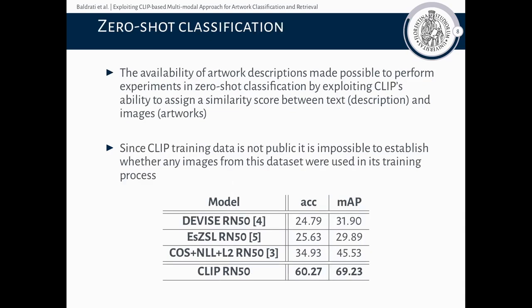We then performed an experiment on zero-shot classification of artworks, thanks to CLIP's ability to score the similarity between an artwork image and an artwork description. The results are shown in the table in the slide. We can see that the performances using CLIP are quite impressive, with an accuracy of more than 60% and a mean average precision of 69%. However, it is necessary to mention that, since the data on which CLIP was actually trained is not public, we do not know if any images from this dataset were used in its training process. If so, we would have some sort of information leak that would make the comparison less fair.